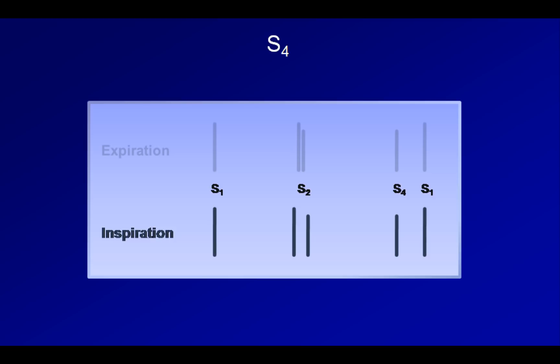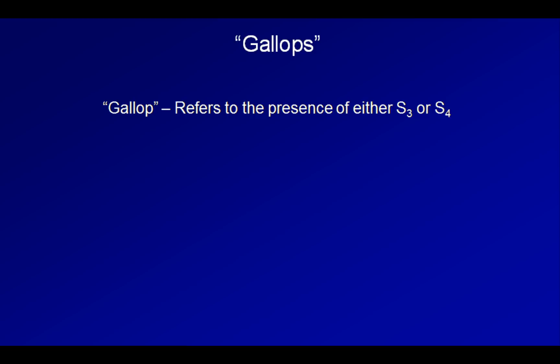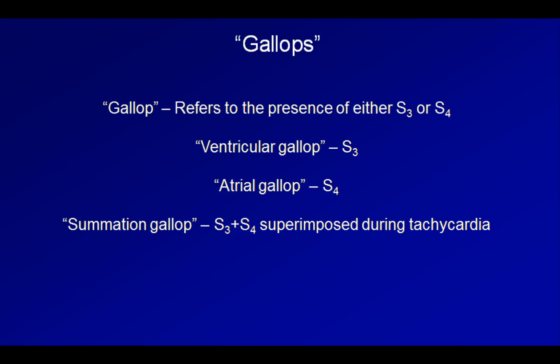Clinicians often refer to S3 and S4 as gallops. More specifically, a ventricular gallop is an S3 and an atrial gallop is an S4. On rare occasions, one might come across the term summation gallop. This is used to describe the situation in which an S3 and S4 are superimposed on one another during tachycardia. This occurs as a consequence of the fact that as the heart speeds up, the part of the cardiac cycle most responsible for its shortening is the time between the rapid phase of ventricular relaxation in early diastole and the atrial kick in late diastole. Eventually, that period of time will become so short that S3 and S4 merge together and one can no longer be sure if an S3 is present, an S4 is present, or both.